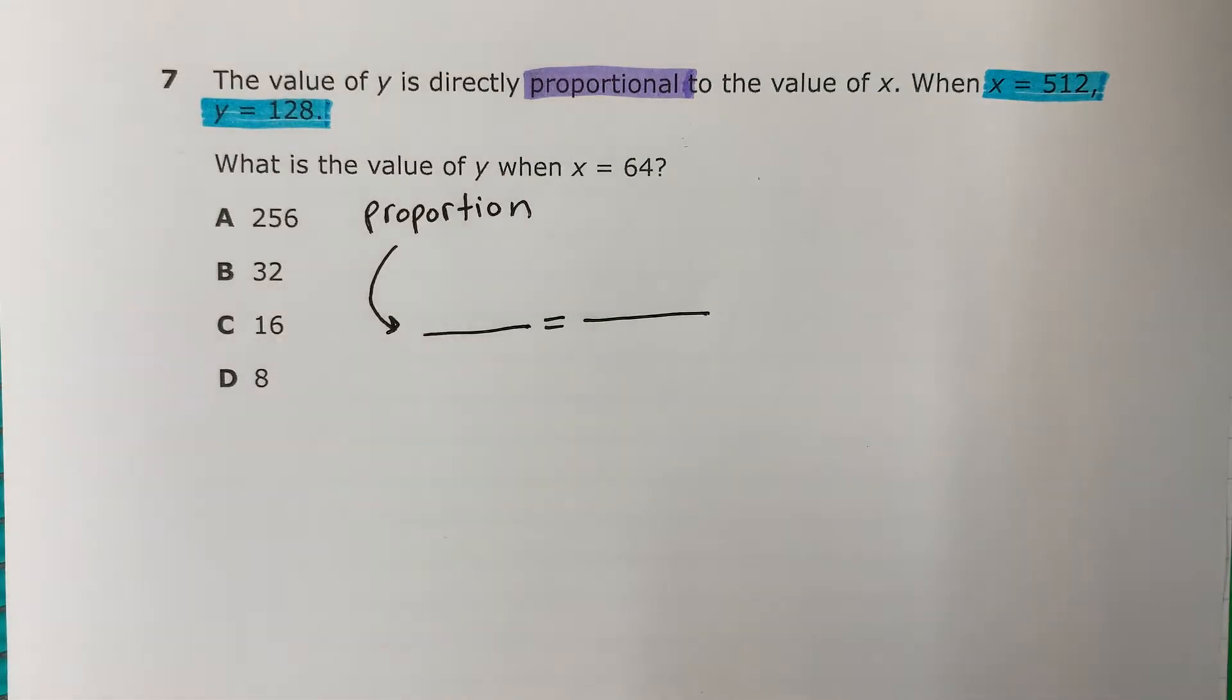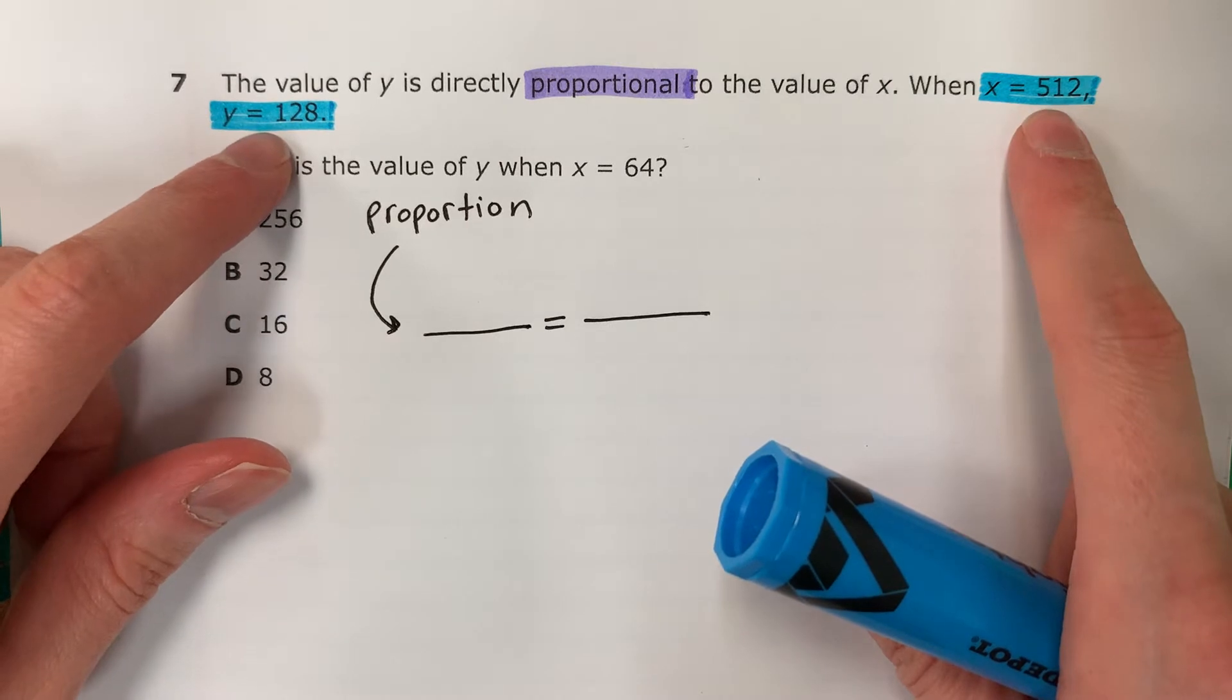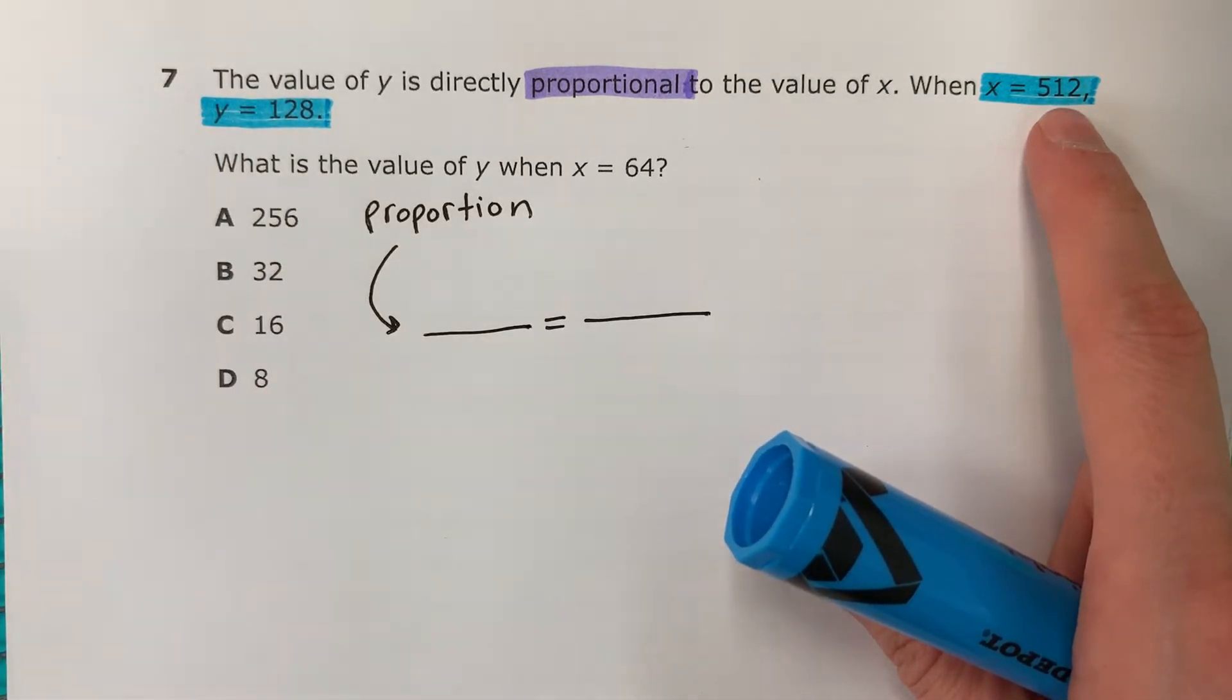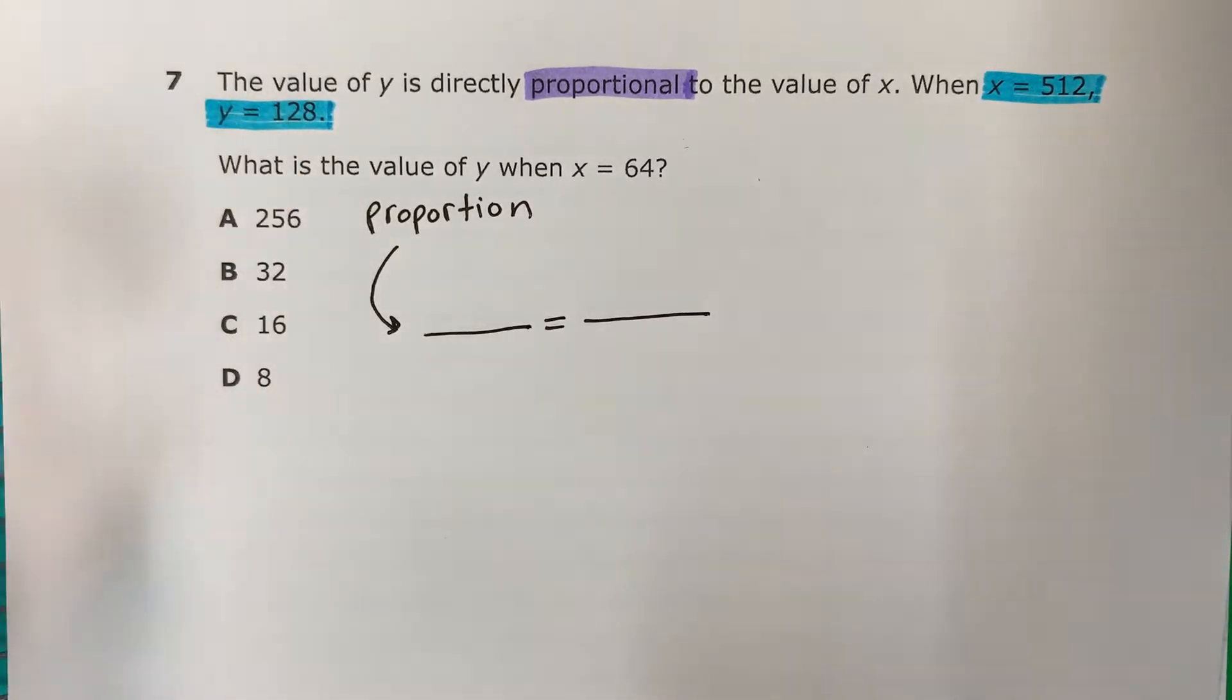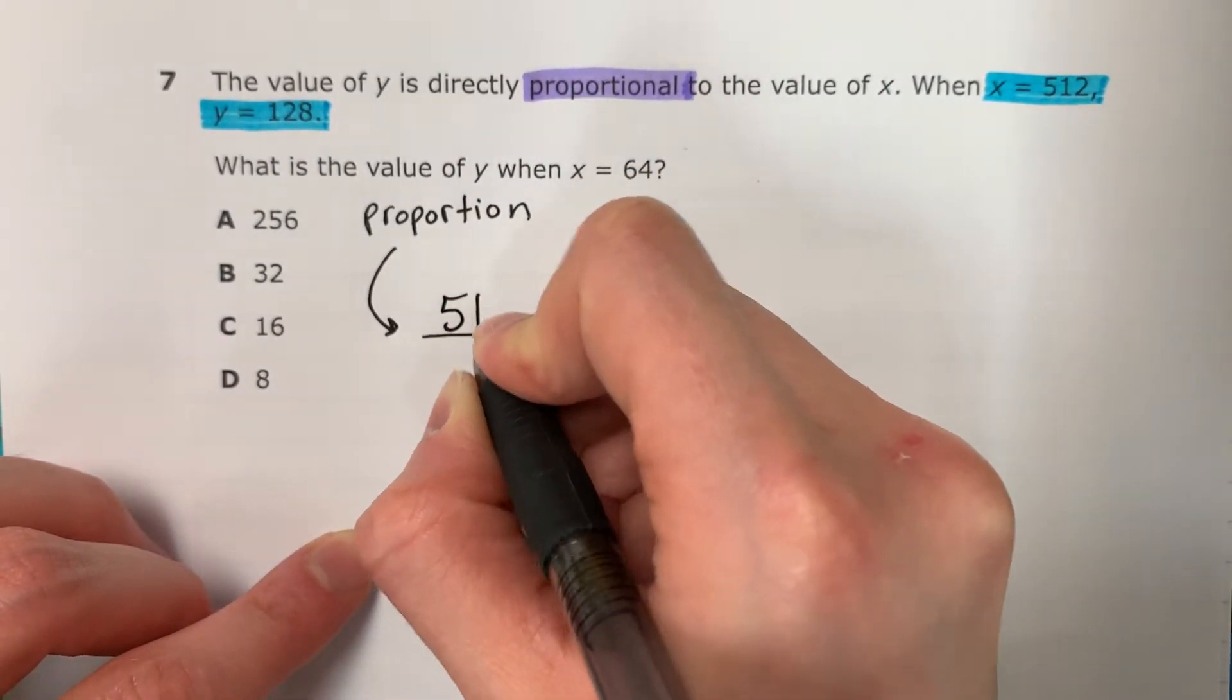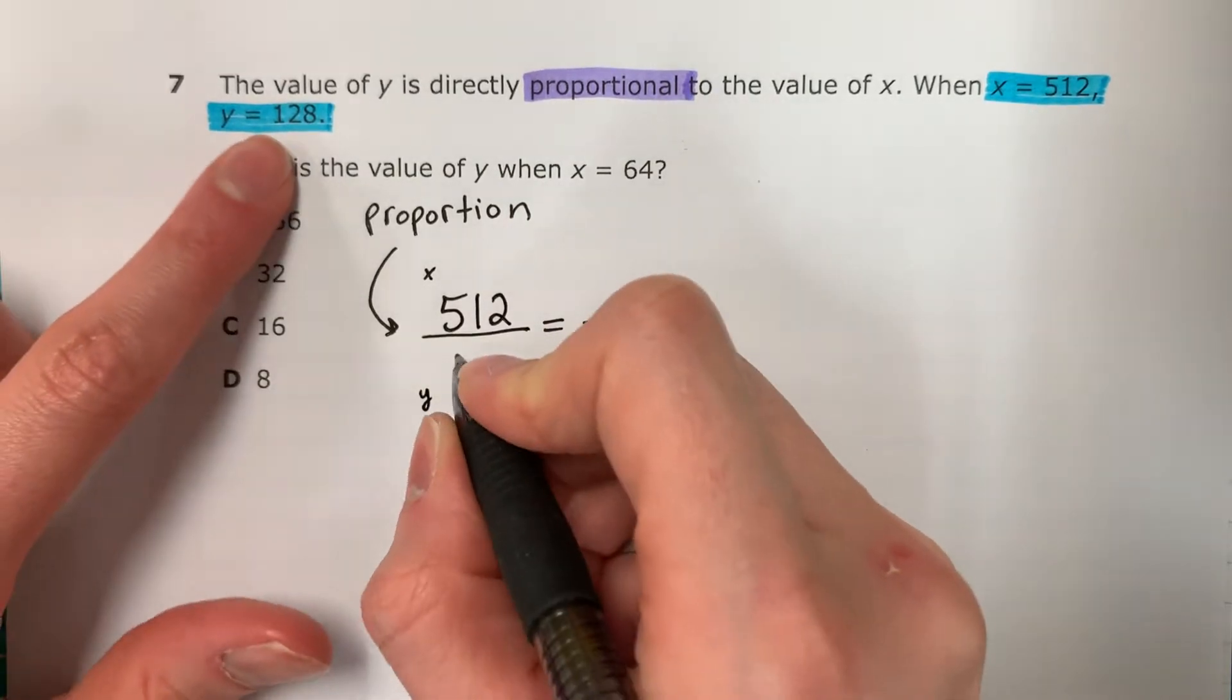These are together, están juntos, because they're saying when X is 512, then Y is 128. Cuando X es 512, la Y es 128. So I'm going to go ahead and write that down. So here, 512 for X. This is X. And its partner, su pareja, is 128.